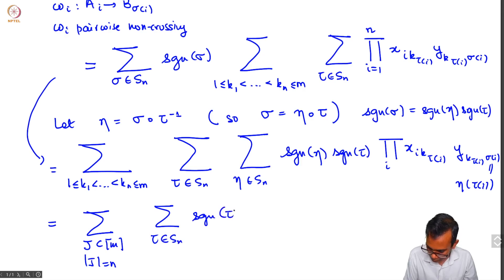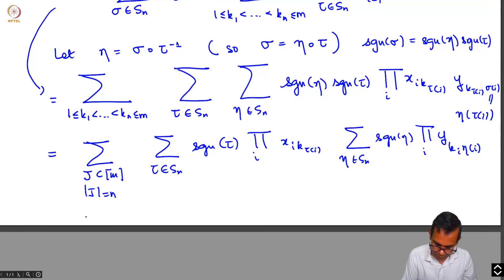And so what you get is exactly sum over tau in Sn, sign tau, product i, xi k tau i. And then you get sum over eta in Sn, sign eta, product over i, y ki eta i.